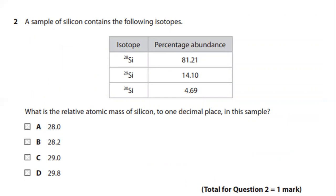Let's see the second question. A sample of silicon contains following isotopes: Silicon 28, silicon 29 and silicon 30 and percentage abundances are given in this table.